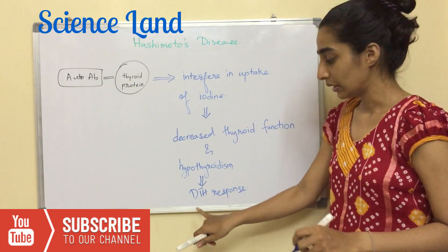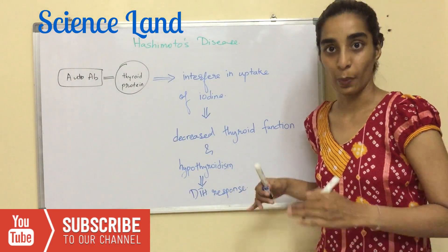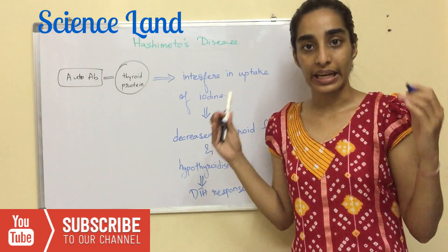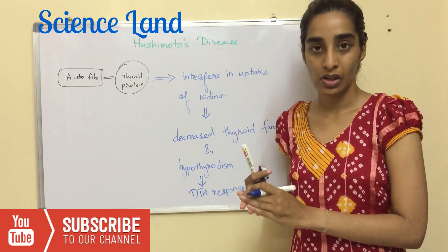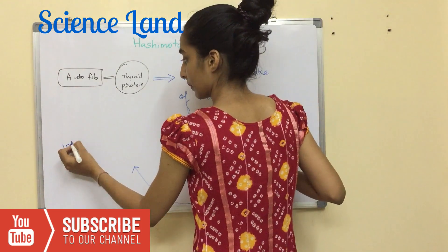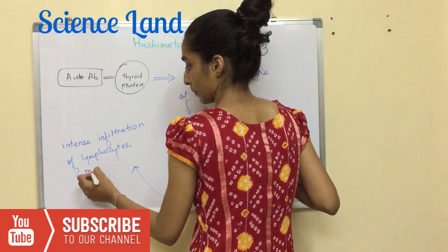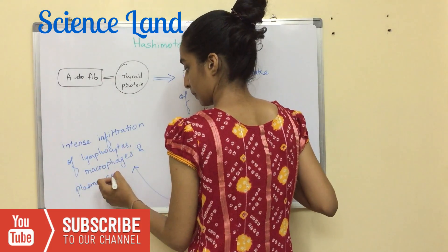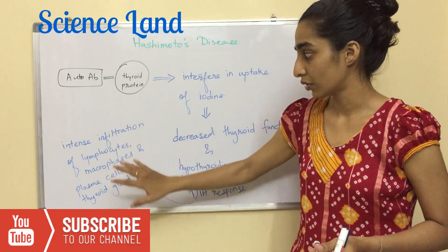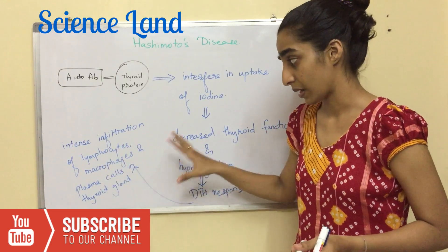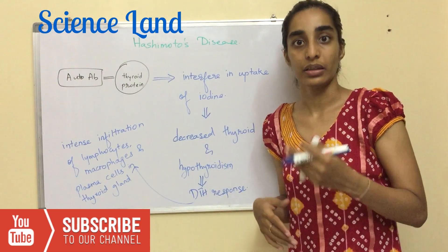Further, a DTH response takes place — a delayed type hypersensitivity response — wherein intense infiltration of lymphocytes, macrophages, and plasma cells takes place in the thyroid gland. This infiltration results in the formation of lymphocytic follicles and germinal centers.